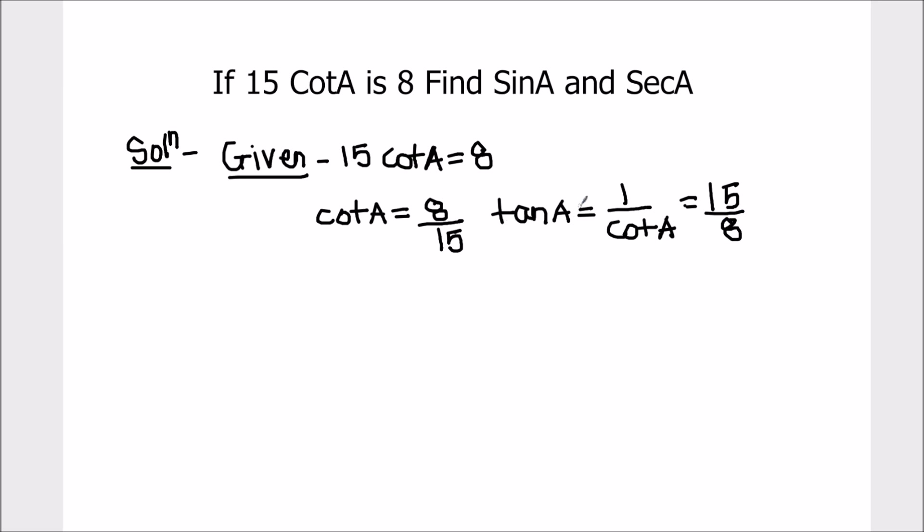Tangent of an angle is equal to perpendicular upon base. So we know the perpendicular and base of a triangle. For finding sin A and sec A, we need to find the hypotenuse of the triangle. Let's draw this triangle and find the hypotenuse.